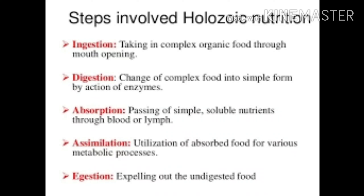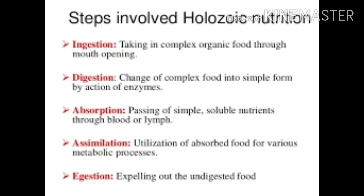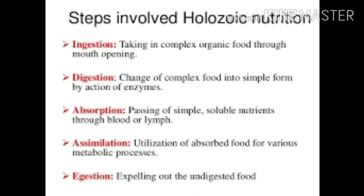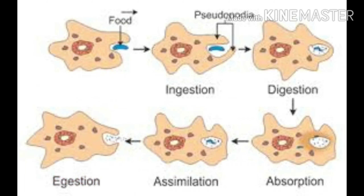There are five major steps involved in holozoic nutrition. First is ingestion, that is taking in complex food through the mouth opening. Second is digestion, that is the change of complex food into simple form by the action of some enzymes. The third is absorption, which means the passing of simple soluble nutrients through blood or lymph. Fourth is assimilation, that means utilization of absorbed food for various metabolic processes. And the last one is egestion, that means expelling out the undigested food from the animal's body.